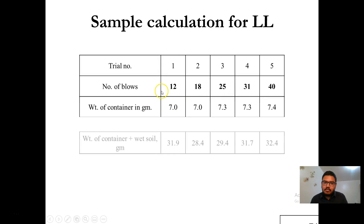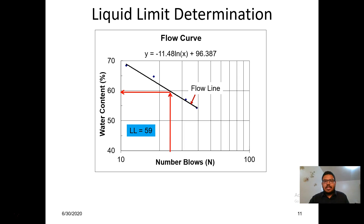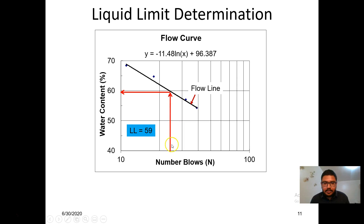We will get 5 numbers of blows with 5 corresponding moisture content values. If we plot them on a semi-log graph where the y-axis is water content and the x-axis is the number of blows on a log scale, we get 5 scattered points. We fit those points with a straight line called the flow line. The liquid limit of the soil sample is the water content corresponding to 25 blows — we draw a vertical line at 25 blows, read across to the flow line, and that moisture content is the liquid limit.